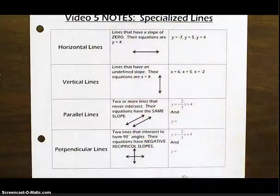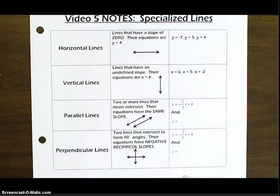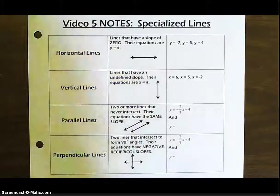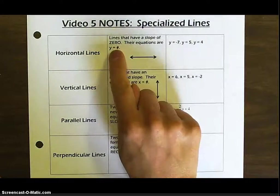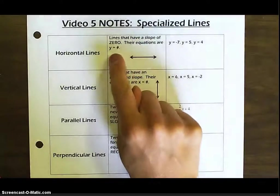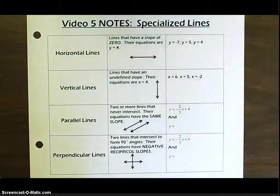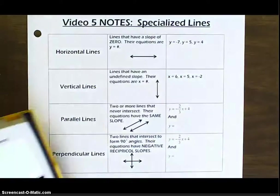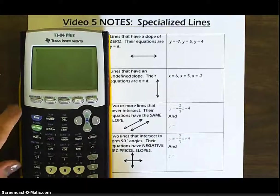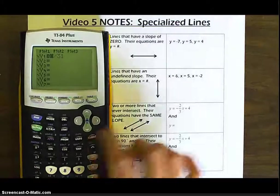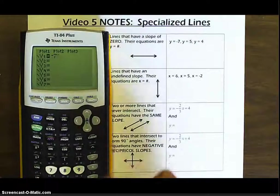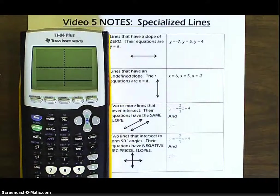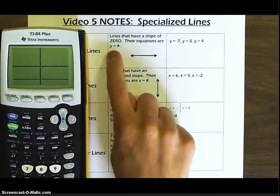Before we talk about parallel and perpendicular, I want to review two special lines: horizontal lines and vertical lines. A horizontal line has a slope of zero, and their equations are y equals a number. For example, y equals negative seven, y equals five, y equals four. We can always go into our calculator, go to y equals, type in negative seven, and hit graph. We get that horizontal line straight across the screen. So it's always y equals a number, and the slope is zero.